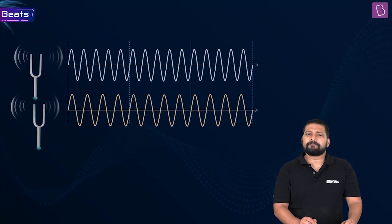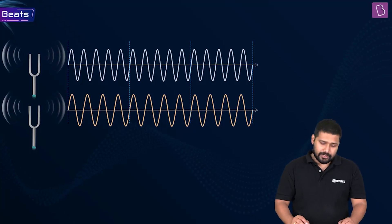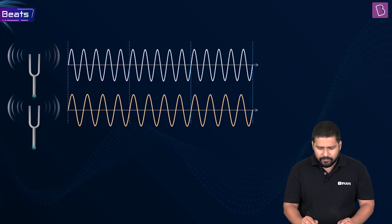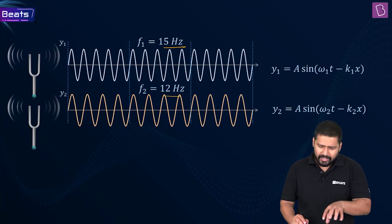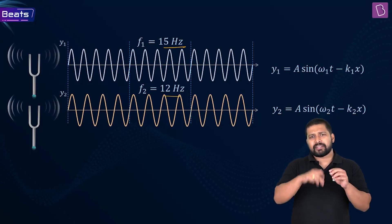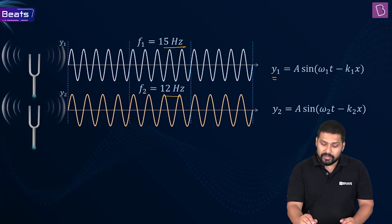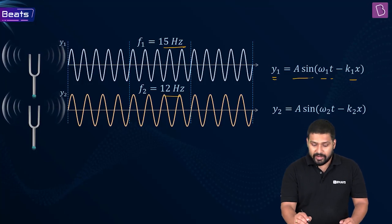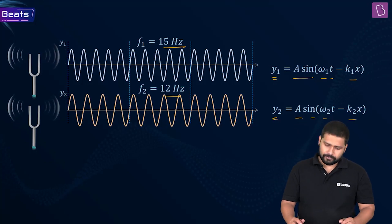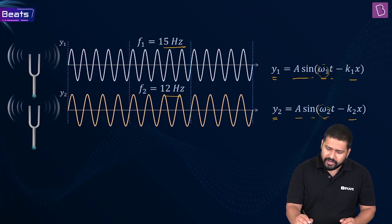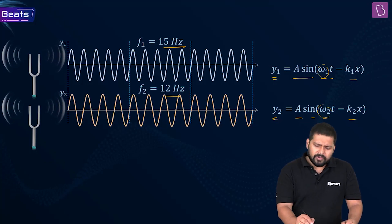Let us say you have two tuning forks generating waves. They superimpose, and their frequencies are different — for example, 15 Hz and 12 Hz. The displacement equations are: y1 = A sin(ω1·t − k1·x) and y2 = A sin(ω2·t − k2·x). Since ω1 ≠ ω2, the frequencies are different, but the amplitude A is the same.